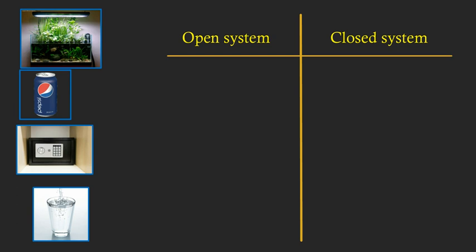And then finally we come to the idea of open and closed systems. An open system is a system where materials can leave or enter the system freely. And then a closed system is a system where items cannot leave and cannot enter.